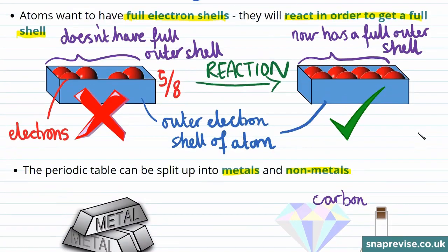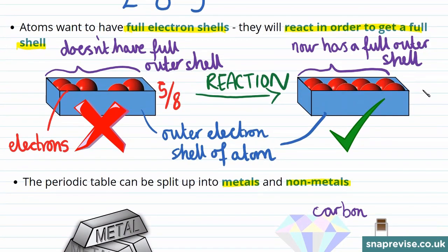We looked at how atoms will react in order to get a full outer shell. And in this specific example, our reaction in order to gain a full outer shell involved the addition of three electrons.